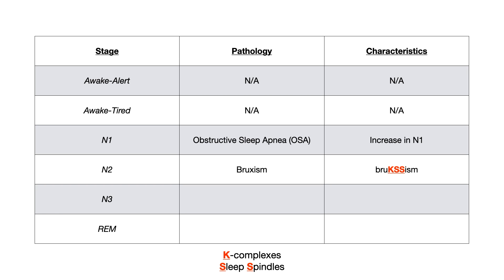For N2, this is where bruxism occurs - I've already alluded to that. To remember it, rewrite the word 'bruxism' with a K and two S's: the K stands for K complexes and the two S's stand for sleep spindles. That allows you to connect bruxism with the EEG waveforms and remember that for N2 it's bruxism with those K complexes and sleep spindles.